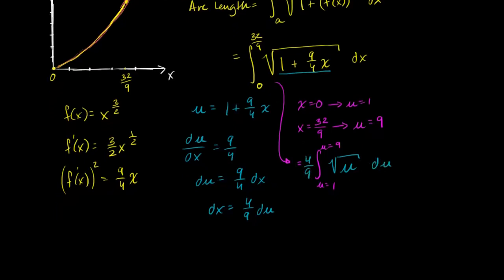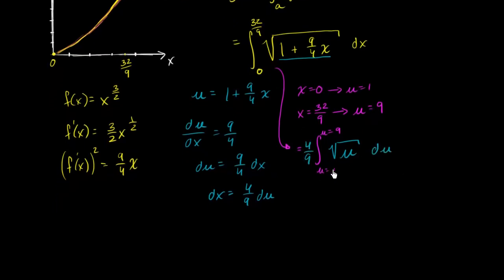And we know how to apply the fundamental, or I guess the second fundamental theorem of calculus here, to evaluate this definite integral. This is going to be four ninths times the antiderivative of the square root of u, which is the same thing as u to the one half, is going to be u to the three halves. And then we divide by three halves, which is the same thing as multiplying by two thirds. And we're going to evaluate that at u equals nine, and u equals one.